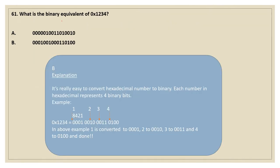61st question: what is the binary equivalent of 0x1234? 0x means hexadecimal, so this is a hexadecimal number 1, 2, 3, 4. We are going to find the binary equivalent. We are going to use the 8421 method for expanding it. 0x is just an indication to let the user know it is a hexadecimal number. We have to expand from 1 to 4.